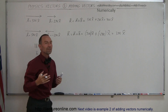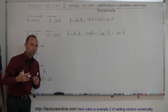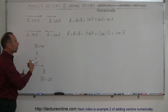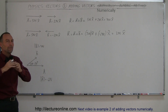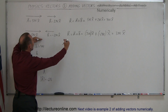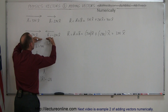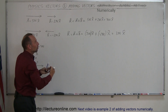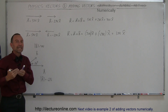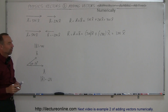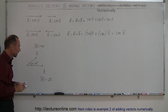Notice that the B vector — the 2 Newtons pointing in the other direction — kind of opposes this vector. Imagine a 5 Newton force in this direction and a 2 Newton force in the opposite direction. The net result is a net 3 Newtons in the positive x-direction. So that's fairly straightforward.